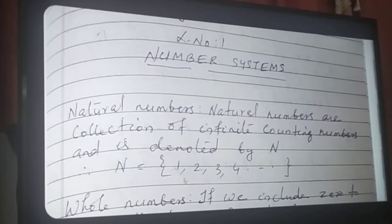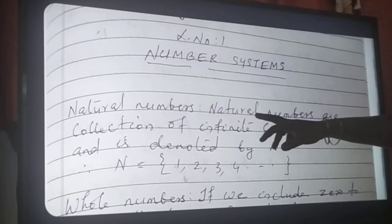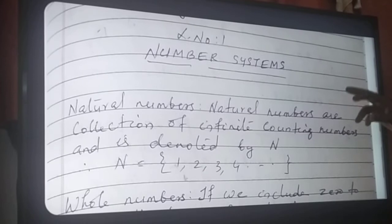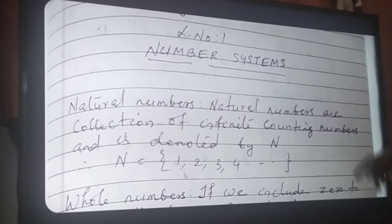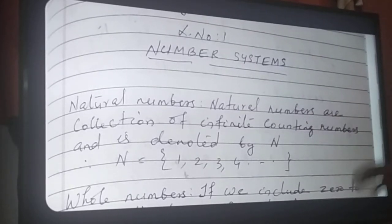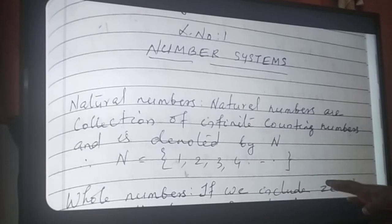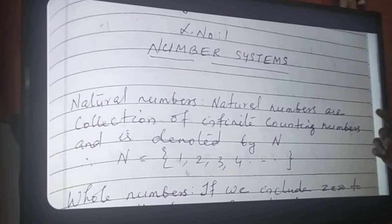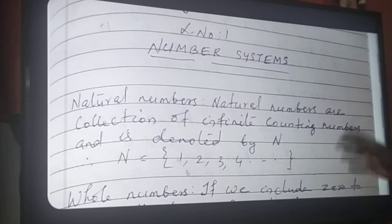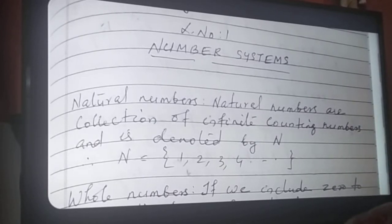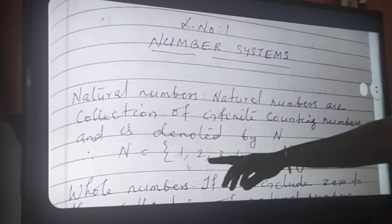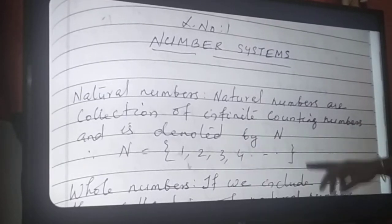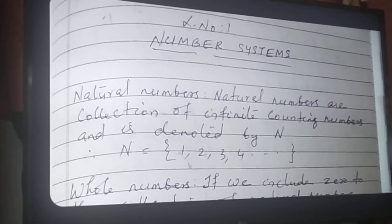First of all, natural numbers. The definition: natural numbers are the collection of infinite counting numbers and is denoted by N. Infinite counting numbers means the numbers which we use for counting: 1, 2, 3, 4, etc. Therefore, the collection of counting numbers is written as N = {1, 2, 3, 4, ...}. The smallest natural number is 1.